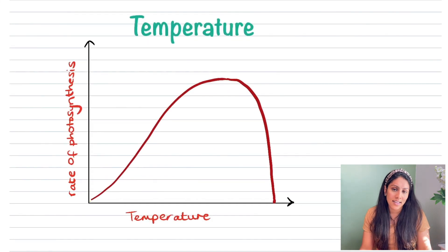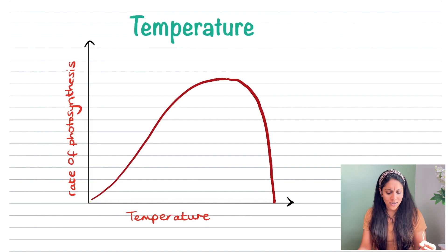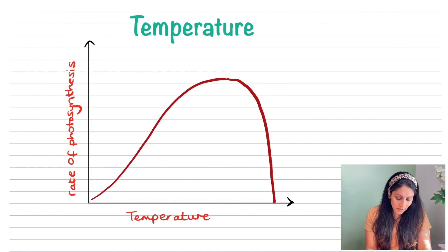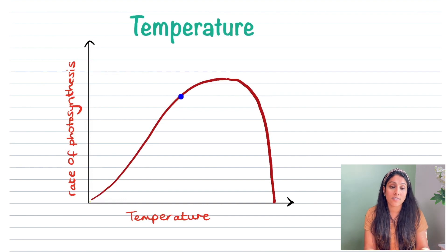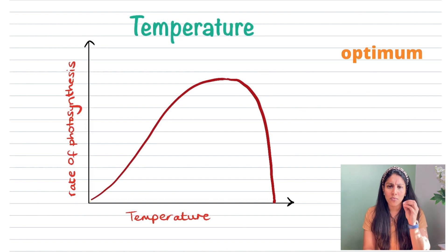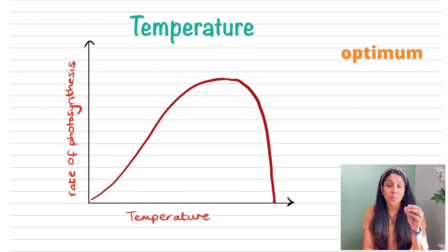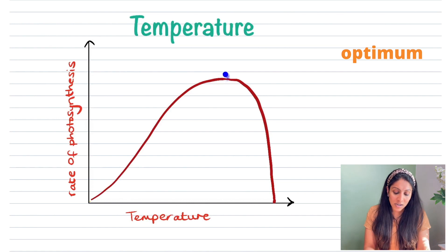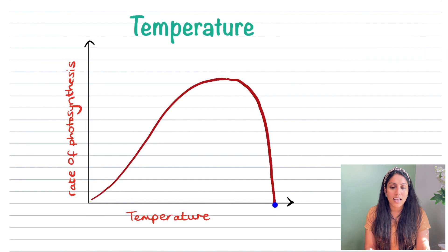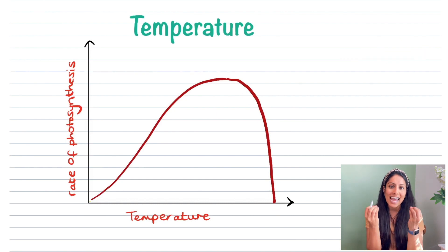The final factor is temperature, and this graph is slightly different to the previous ones. As temperature increases, the rate of photosynthesis increases until it reaches its optimum — a key word meaning the maximum. It then starts to decline.